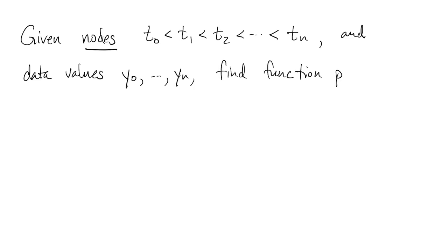In this chapter, we return once again to the idea of interpolation, but with a lot more detail. The setup is that we are given nodes indexed from t0 to tn, and data values y0 to yn at the nodes. The goal is to find a function p such that p at tk equals yk for all k. That's our interpolation problem.